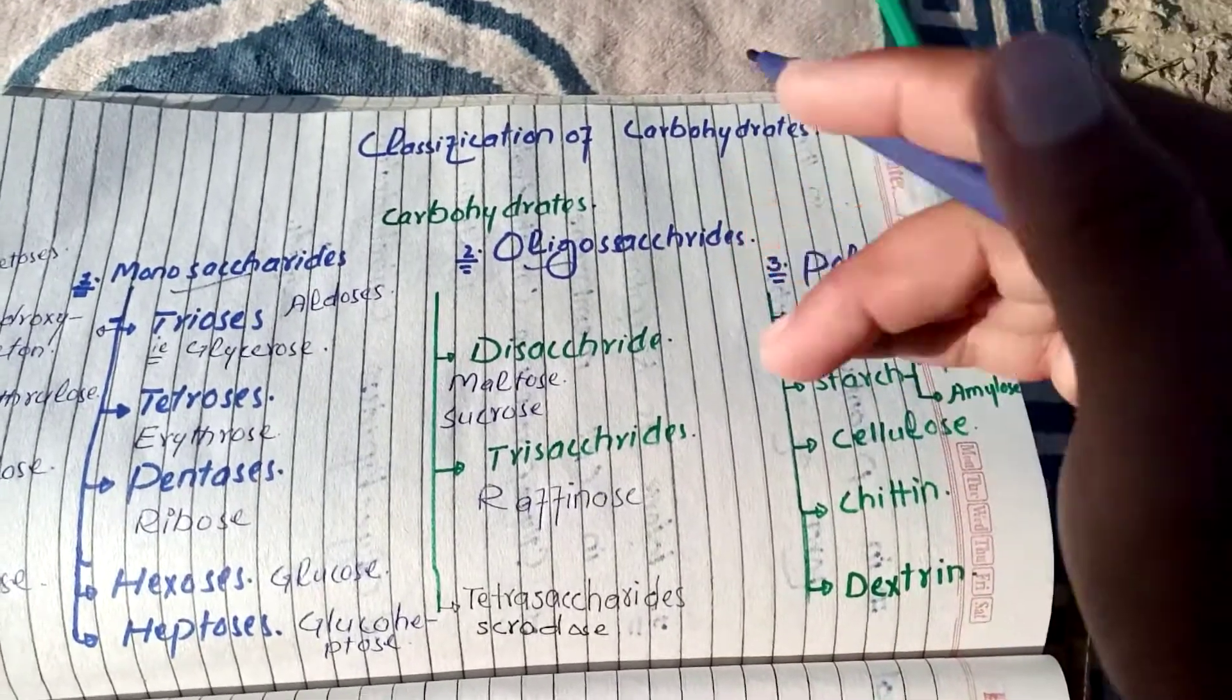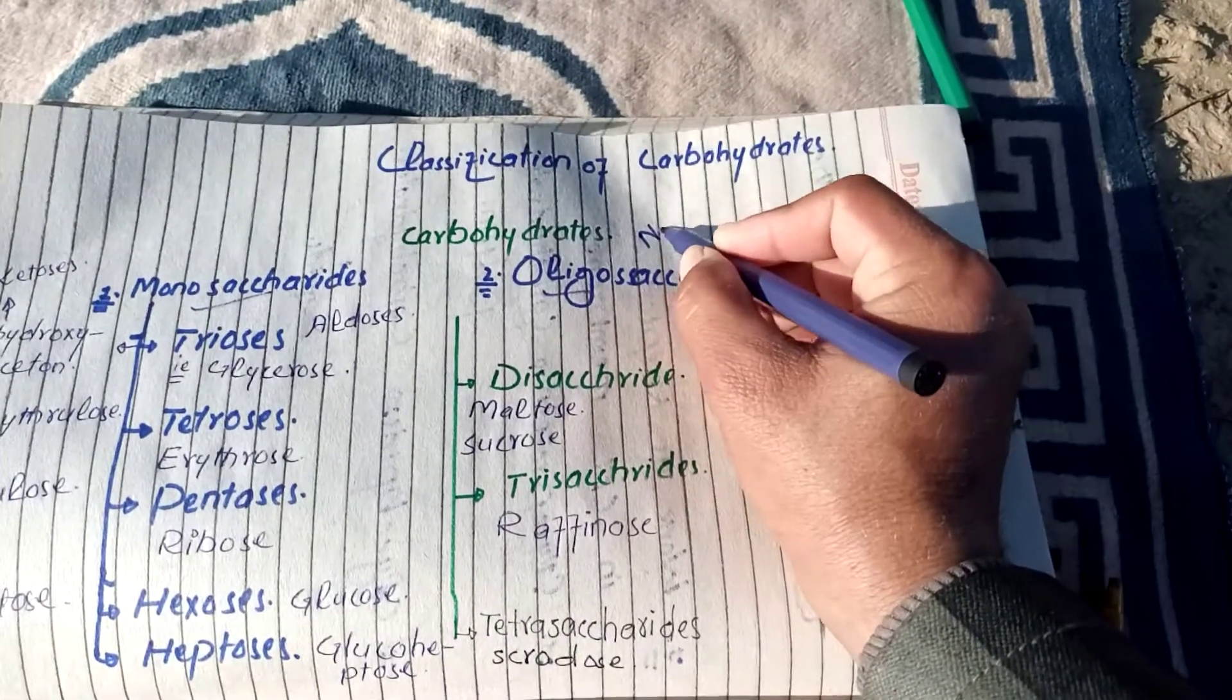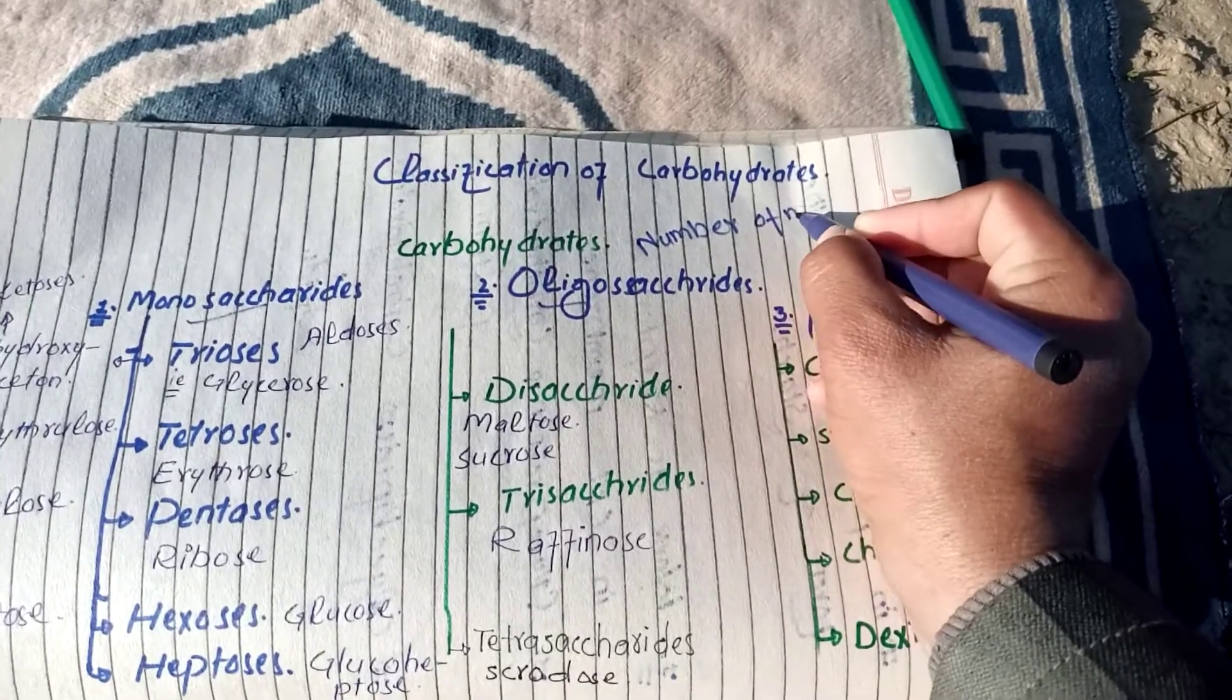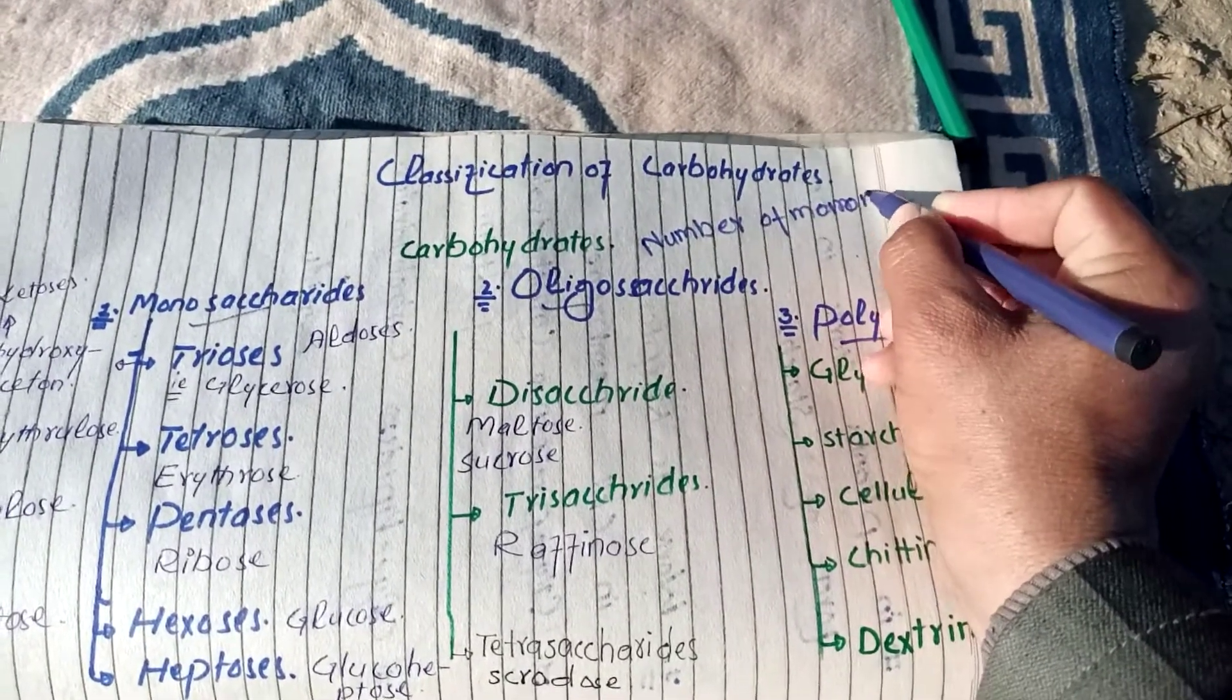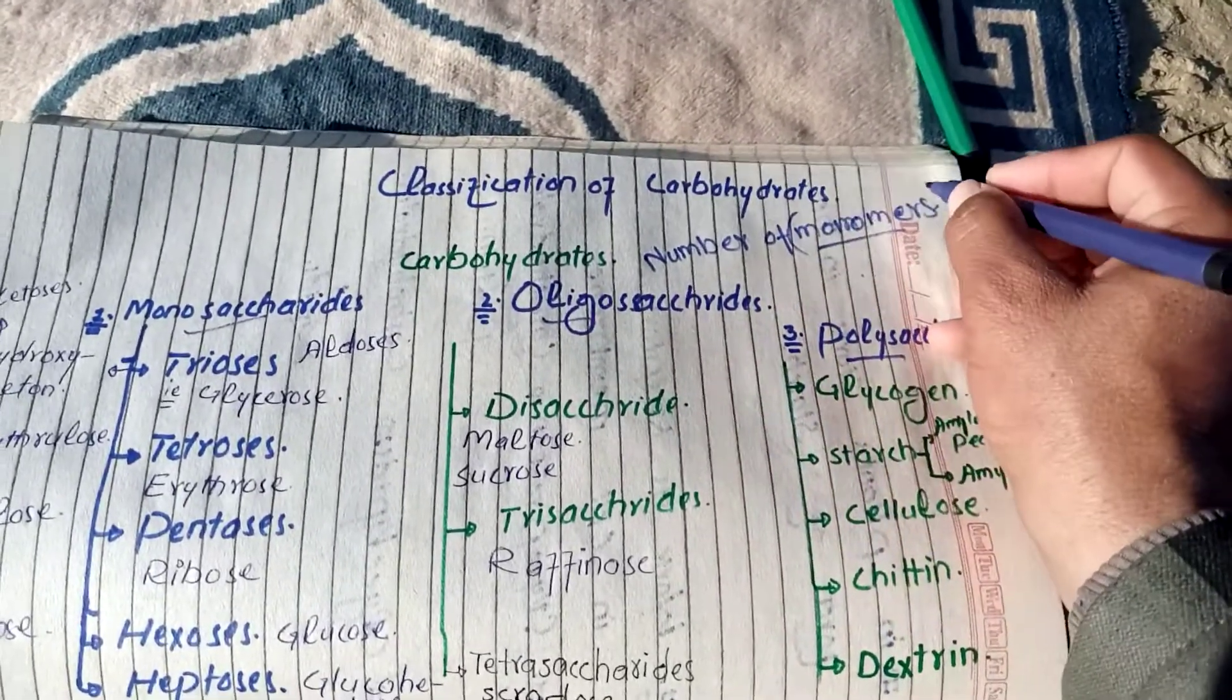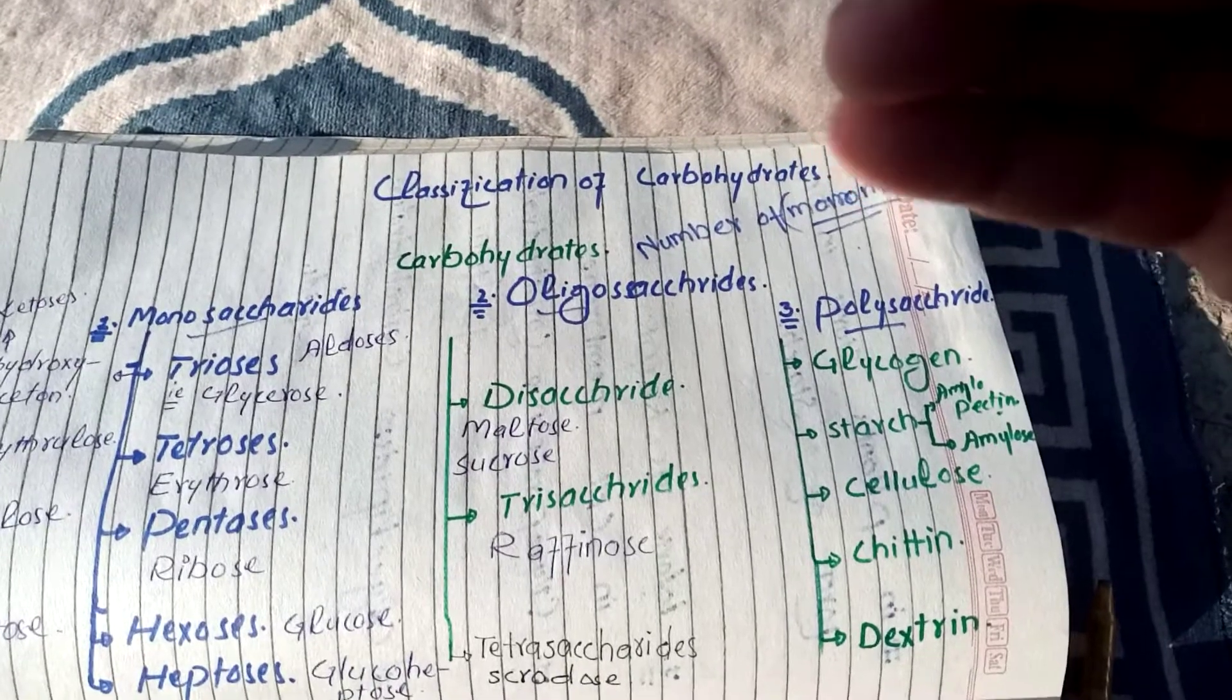This classification is on the basis of monomer, number of monomer. Monomer jo hai woh smallest, ya building unit, ya smallest unit hai jis se carbohydrates banta hai.